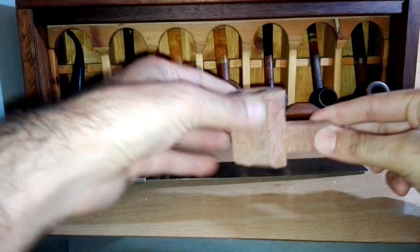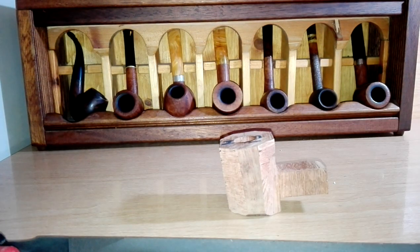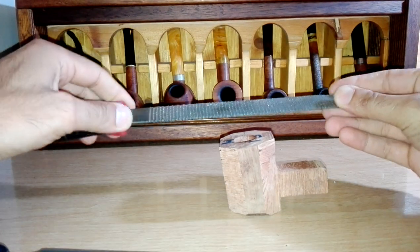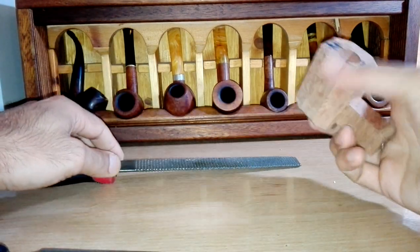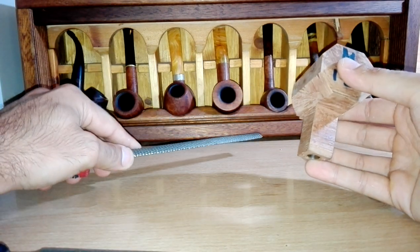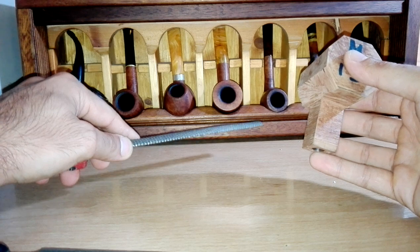To our next step, we have to get rid of our saw and we are going to work most of the time using a rasp. We have to use it, of course as always, you have to keep your block steady on a vise.